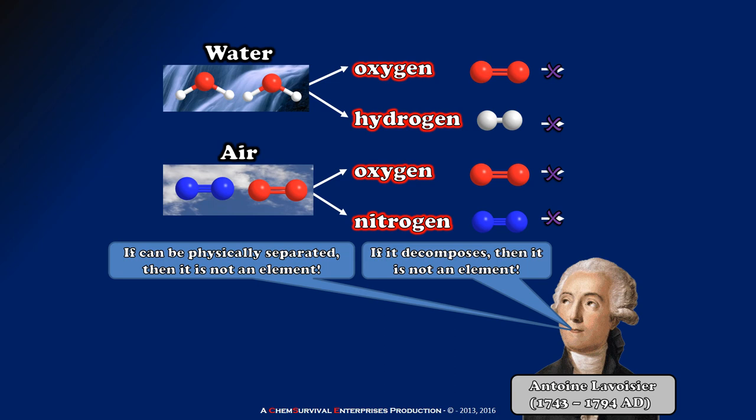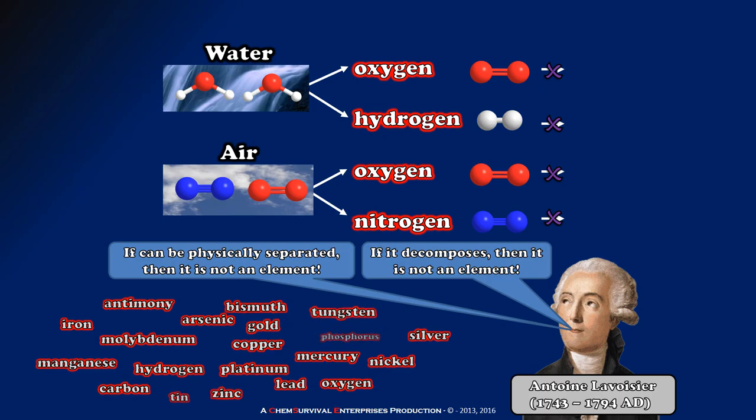Lavoisier and his contemporaries continued work in this vein and were able to correctly identify and catalog approximately two dozen elements by the time of his death in 1794. But, just like Aristotle, modern chemists don't tend to report these elements simply as a list. Instead, we organize them spatially based on certain properties. And, to see how this practice was started, we need to jump ahead a few more generations.